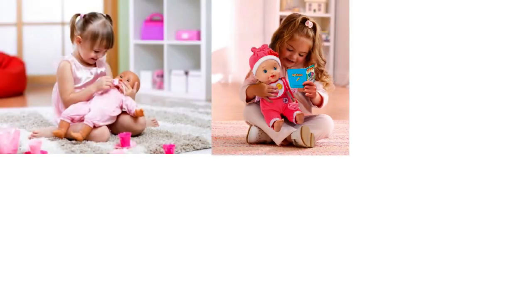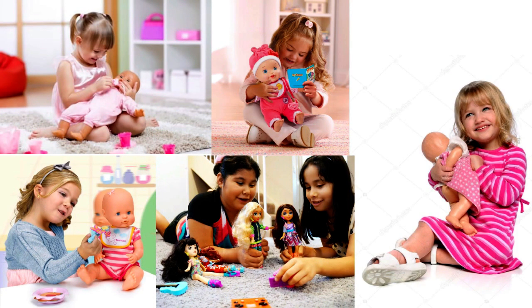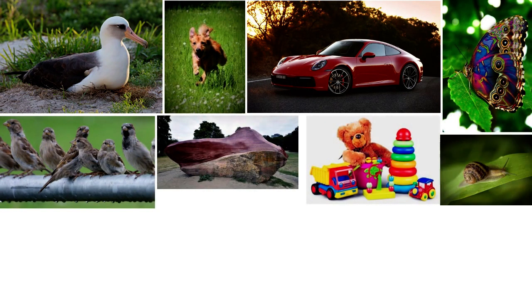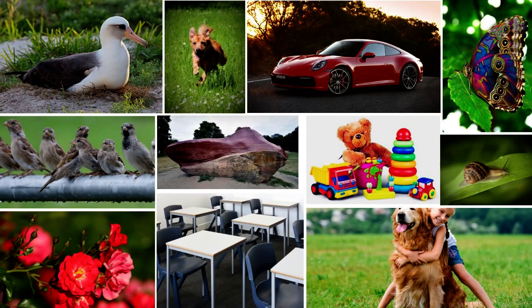Look at the pictures. The kids are playing with dolls. We know that the kid is a living thing and the doll is a non-living thing. However, how do we distinguish a living thing from a non-living thing? What are the characteristics of living things? Look around you. What are the living things and the non-living things you can see? How do you differentiate living things and non-living things?